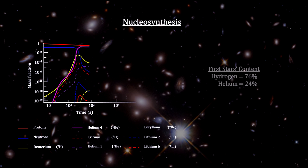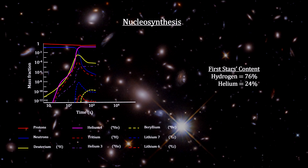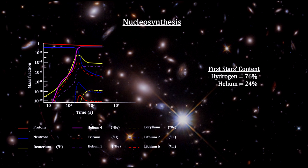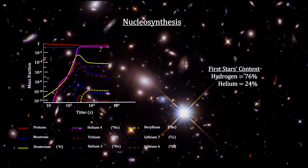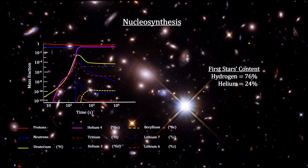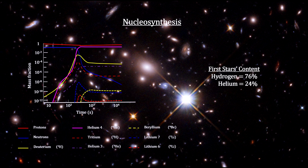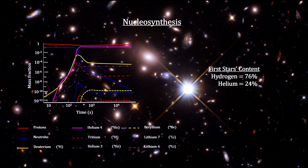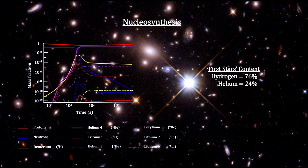All the first generation stars, called Population 3 stars, had to be made from just these elements. But up to the summer of 2022, no telescope has ever seen a Population 3 star to determine if this theory is correct.